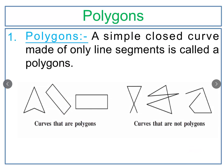Next, polygons. A polygon is a simple closed curve made of only line segments. There are two conditions for a polygon: first, it should be closed, and second, it should be made up of only line segments. For example, these figures are made up of only straight lines forming closed curves. Similarly, here we have four straight lines joined together making a closed figure. All figures which are closed and made up of only straight lines are called polygons.